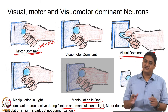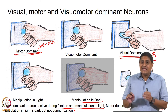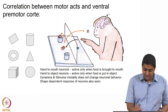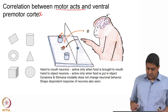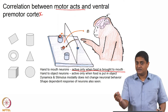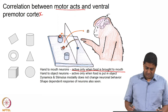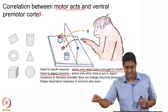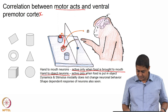Visuomotor neurons perform both functions combined — they are active during manipulation in light, manipulation in darkness, and object fixation. So there are discrete, distinct sets of neurons that perform each of these functions. There are also neurons in the ventral premotor cortex that are active only when food is brought to the mouth, and hand-to-object neurons that involve transportation of a food pellet from one place to another destination.